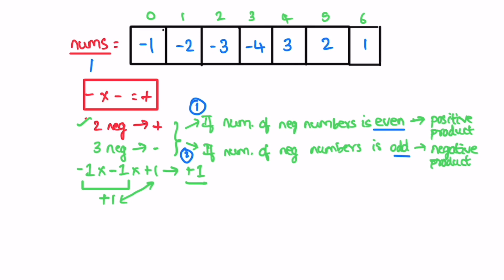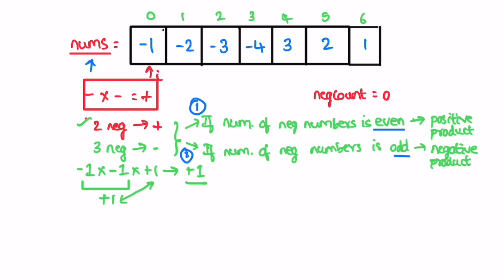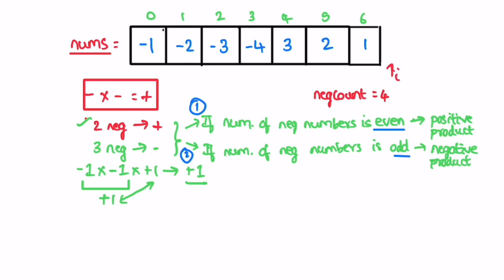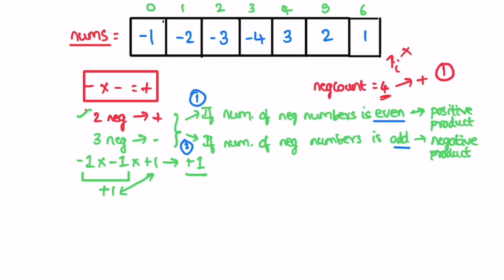Using these observations, count the negative numbers in the array to determine the sign. Iterating from left to right: i=0 points to a negative number, so increment the negative count to 1. Continue checking each element — elements at the next three positions are also negative, incrementing the count each time. The remaining elements are not negative, so the count stays. We end with 4 negative numbers — since this is even, the output is positive, so return 1.